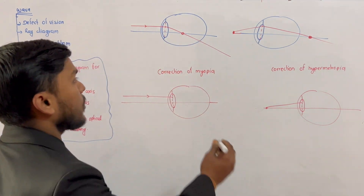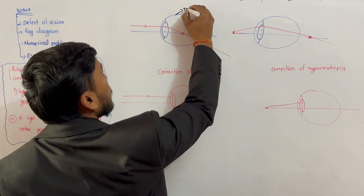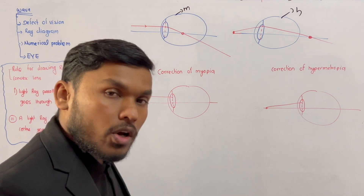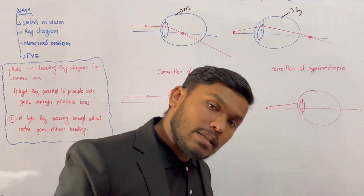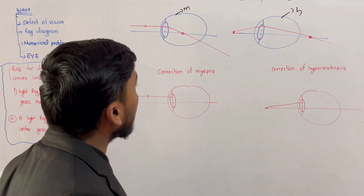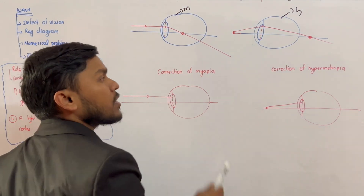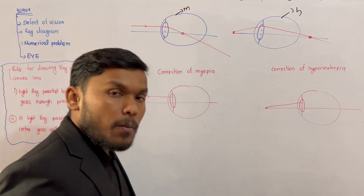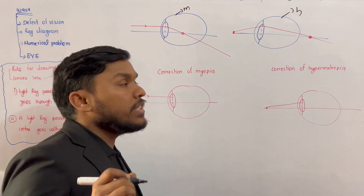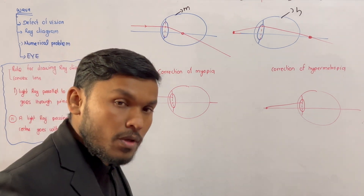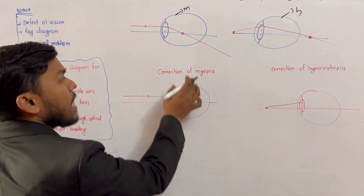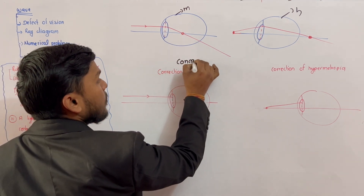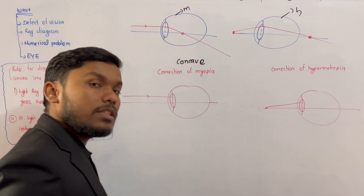If we have myopia or hypermetropia, then we will talk about the same thing. Myopia and hypermetropia relate to where the image forms on the retina. If you use the short side of the lens, you can use a concave lens.